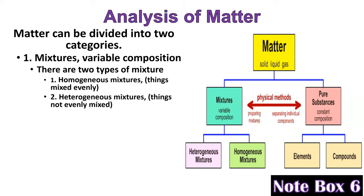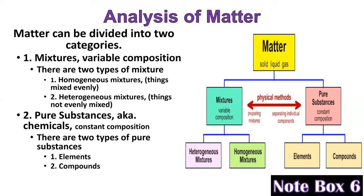So matter can be divided into two categories: mixtures, which have variable composition — homogeneous (evenly mixed) or heterogeneous (unevenly mixed) — and pure substances, also known as chemicals, which have a constant composition. For example, water is H2O in America, in Kampala Uganda, in Buenos Aires, in the time of the dinosaurs, and 10,000 years into the future. It's always H2O. Pure substances come as elements like O2 oxygen in the air, and compounds like water, H2O.